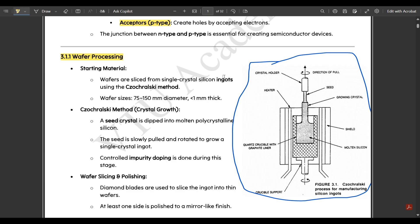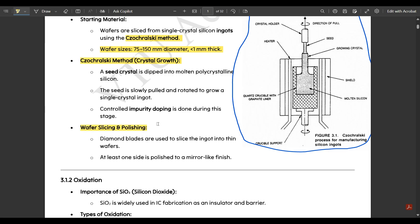First is starting material. Wafers are sliced from single crystal silicon ingots using the Czochralski method. Wafer sizes are normally from 75 to 150 millimeter in diameter and less than one millimeter thick. The Czochralski method is used for crystal growth. A seed crystal is dipped into molten polycrystalline silicon. The seed is slowly pulled and rotated to grow a single crystal ingot. Controlled impurity doping is done during this stage.